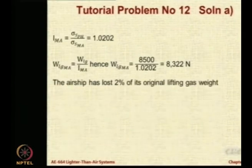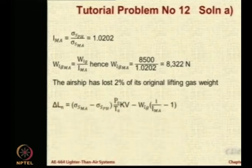Now, the airship has lost 2% of its original lifting gas. That is why it is 1.0202, nearly 2.0202% is gone. So, therefore, delta L will be the difference in the density ratios into P0 by T0 into K into volume minus WLG upon 1 upon IMA minus 1.